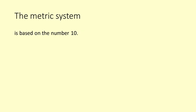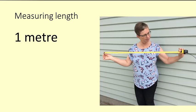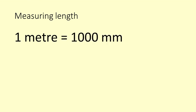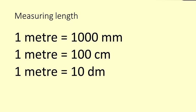The metric system for measuring uses our base 10 number system. The base unit for measuring length is 1 metre. It is this long. A metre is the same as 1000 millimetres.